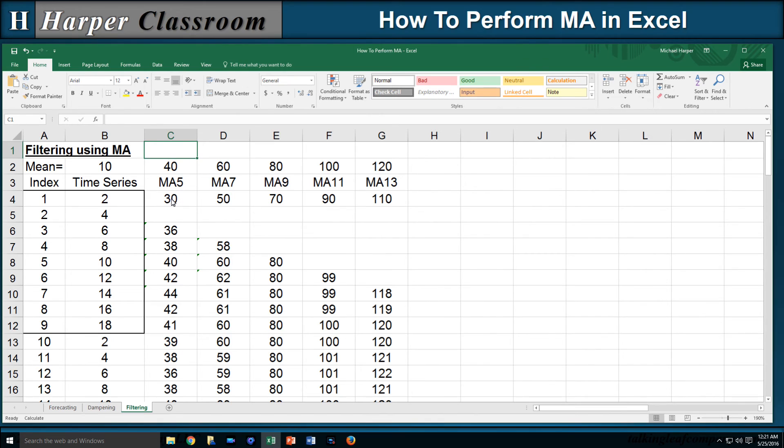Well, to see the difference, I added 30, 50, 79, and 110, so the mean is increased. So I can compare my time series like I did with dampening. Let's plot the time series with the moving averages.